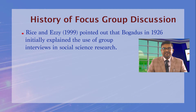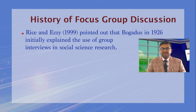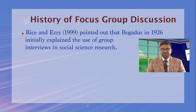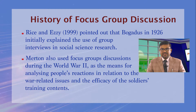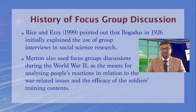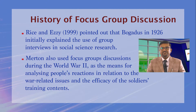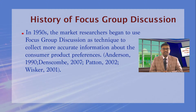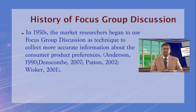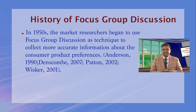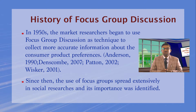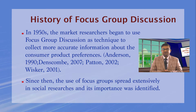Discussing the history of focus group, Rice and Easy pointed out that initially the focus group was used in social science research to discuss during the World War as a means for analyzing people's reactions to war-related issues and the efficacy of soldiers' training contents. In the 1950s, market researchers began to use focus group discussion techniques to collect more accurate information about consumer product preferences. Since then, the use of focus group discussions spread extensively in social sciences and its importance was identified.